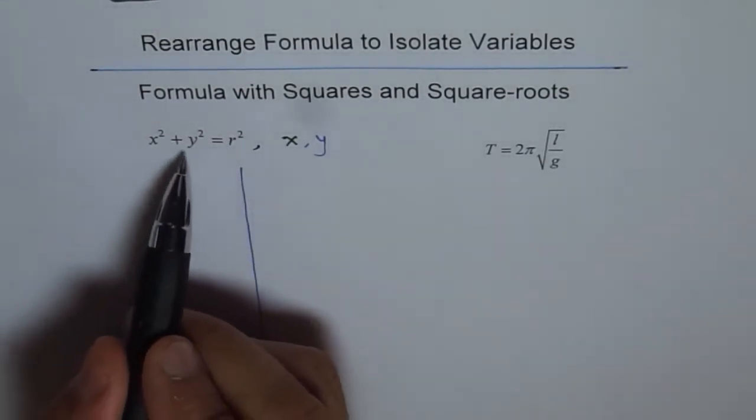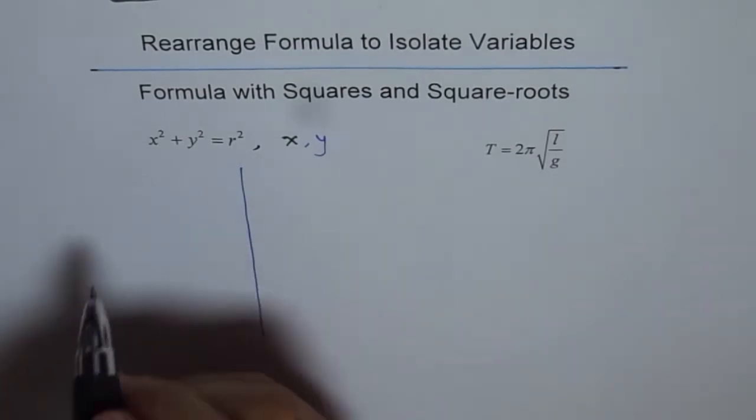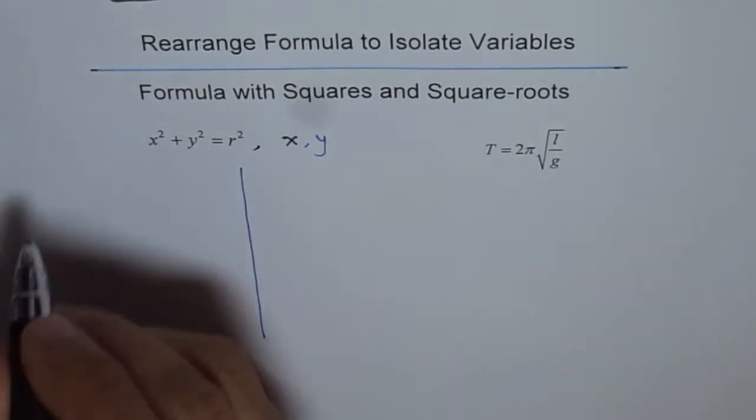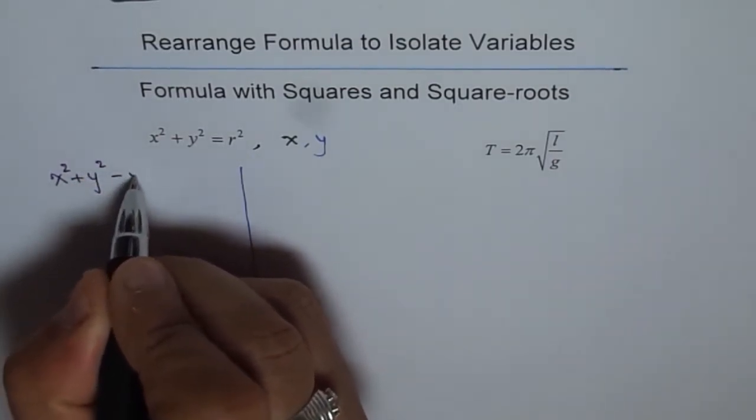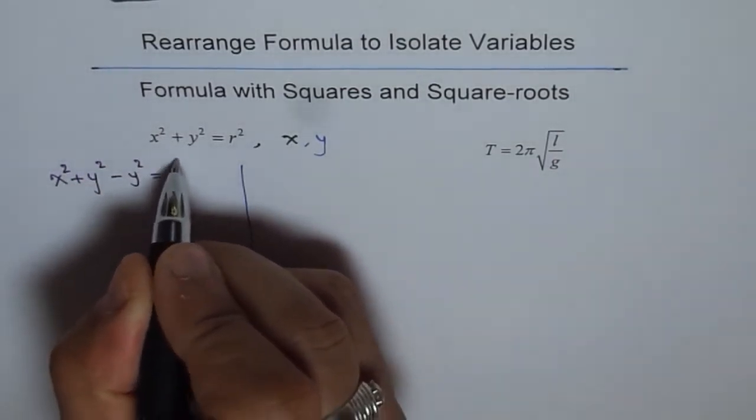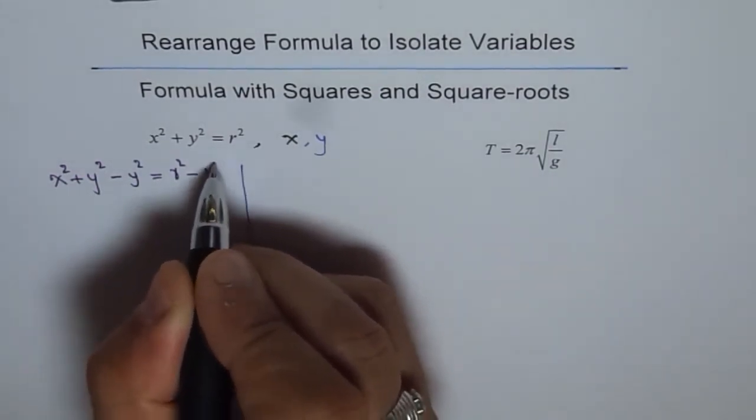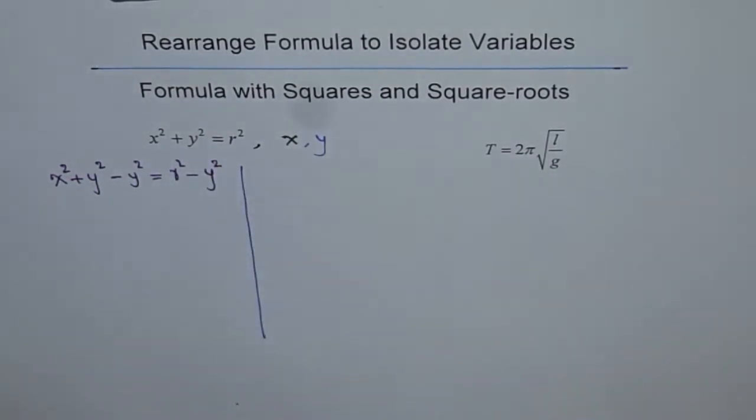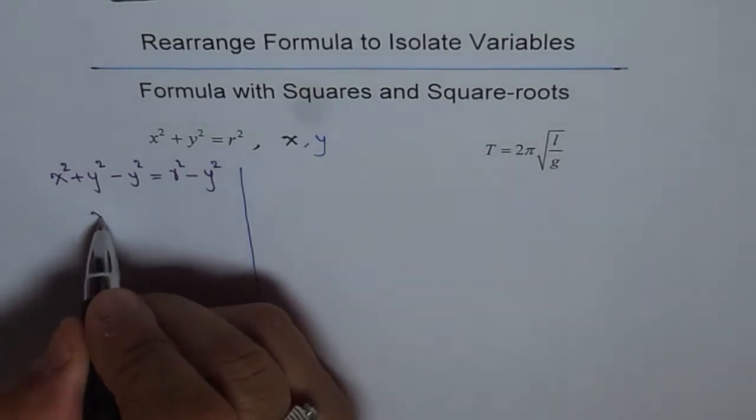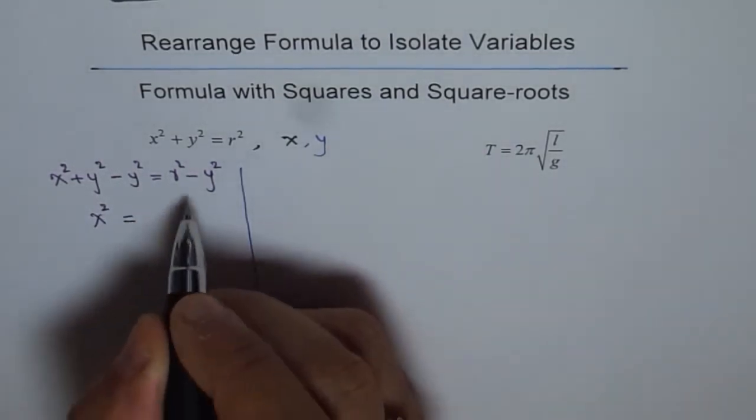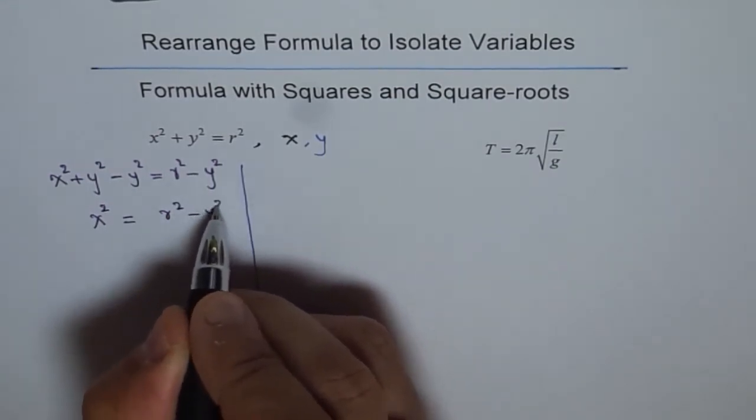So, we need to find what is x from this formula. That means we want to get rid of y square. So, the first step will be take away y square from both sides. So, we get x² + y² - y² = r² - y². So, y² - y² is 0. So, we get here x² = r² - y².